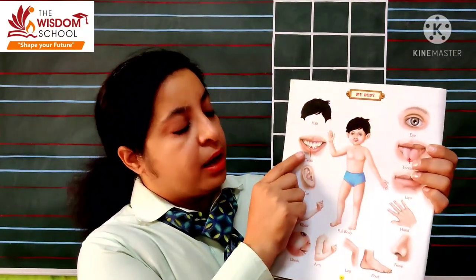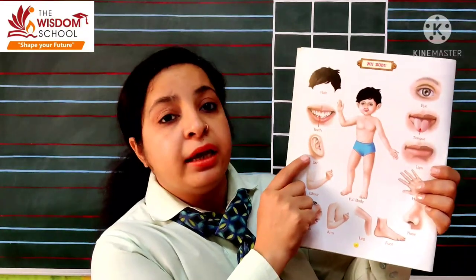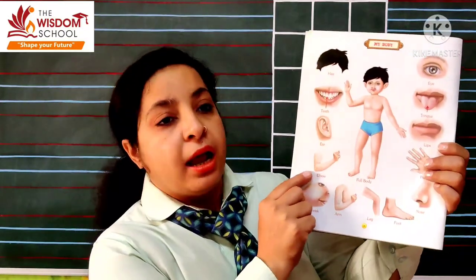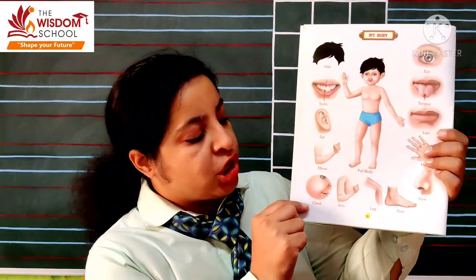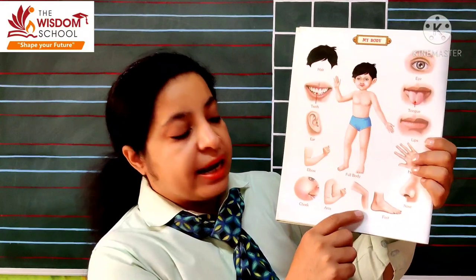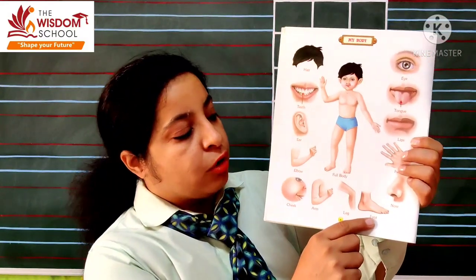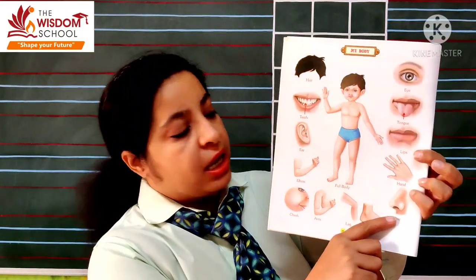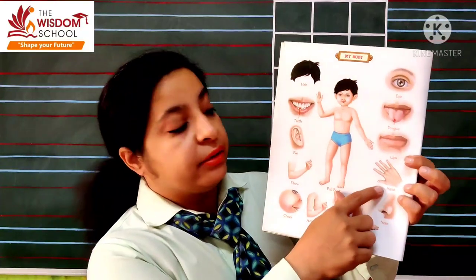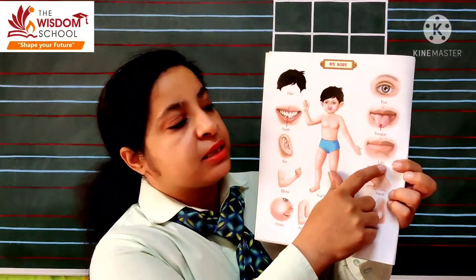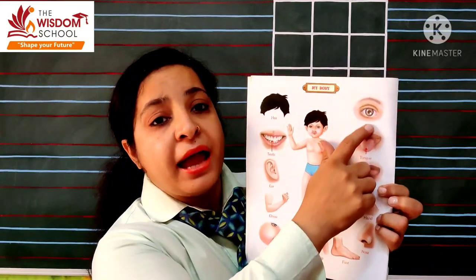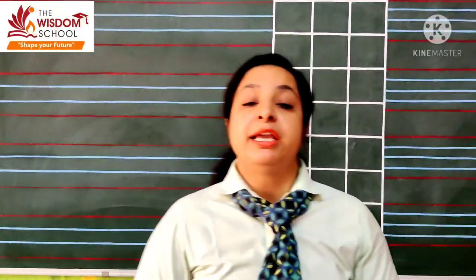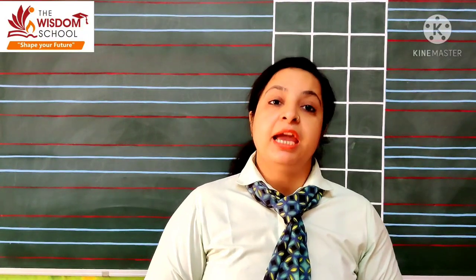Hair, teeth, ear, elbow, cheek, arm, leg, foot, nose, hand, lips, tongue, eye. Toh yee the hamare body ke parts. Theek hai?